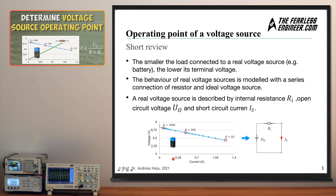The smaller the load we connect to a real voltage source such as a battery, the lower its terminal voltage will be. You can observe this in the current-voltage characteristic: on the x-axis is the current flow generated by the battery, on the y-axis is the voltage drop across the terminals, and each point corresponds to a different load resistor connected to the battery. As you can see, the terminal voltage drops as the load resistor decreases. For a 1 ohm resistor the voltage drop is below 50% of the 9-volt battery rating.